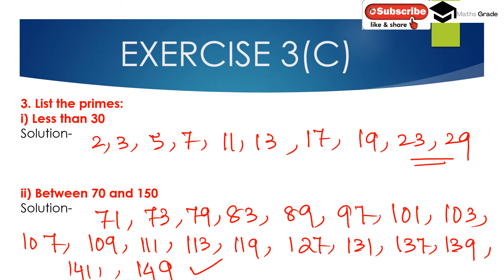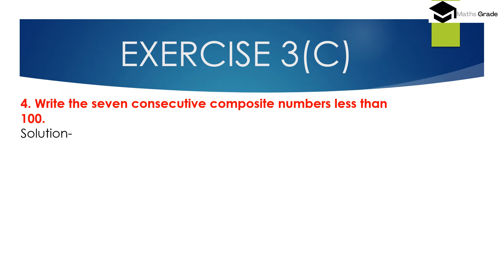These are the prime numbers between 70 and 150. Now question number 4: find 7 consecutive composite numbers less than 100. We know that numbers which are not prime are composite numbers.